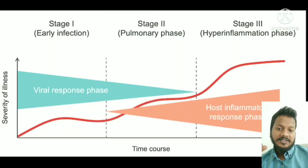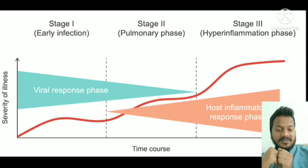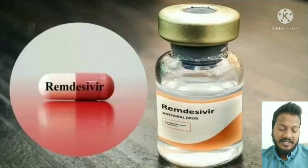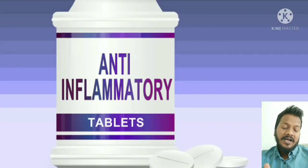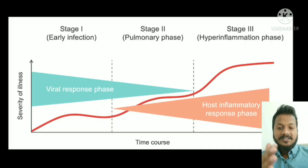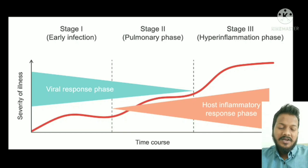The timing of using various drugs in COVID management is very important. In mild and moderate stages, and within the first 15 days of severe stage where viral load is very high, antiviral drugs may show some benefits. In moderate and severe stages where alveolar inflammation starts, anti-inflammatory drugs show benefit. Using anti-inflammatory drugs in mild stage or antiviral drugs in late severe stage offers no benefit.